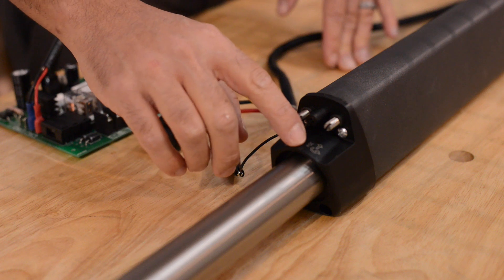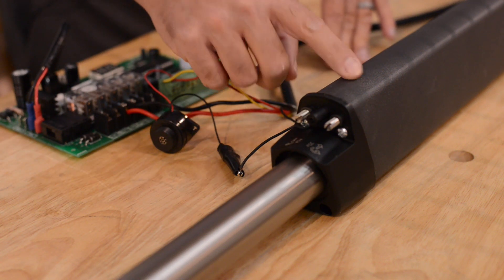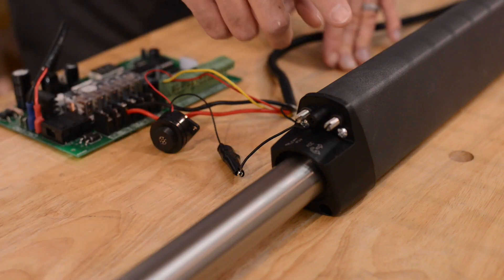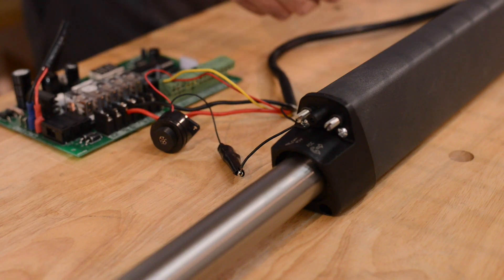We are going to adjust the FCC screw because that is the limit switch that is out towards the end of the arm when the piston is extended. And we are going to adjust the FCC screw counterclockwise to make the gate close less.